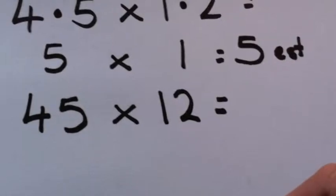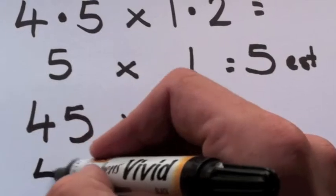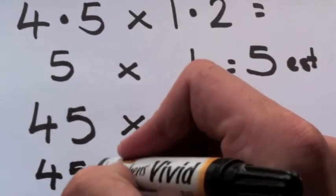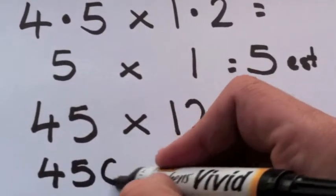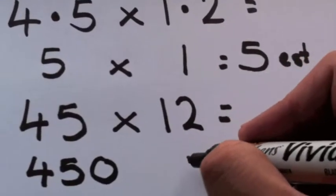And remember, I showed you how to do that last time. So you're going to go 45 times 10, which is 450. You're going to go 45 times 2, which is 90.